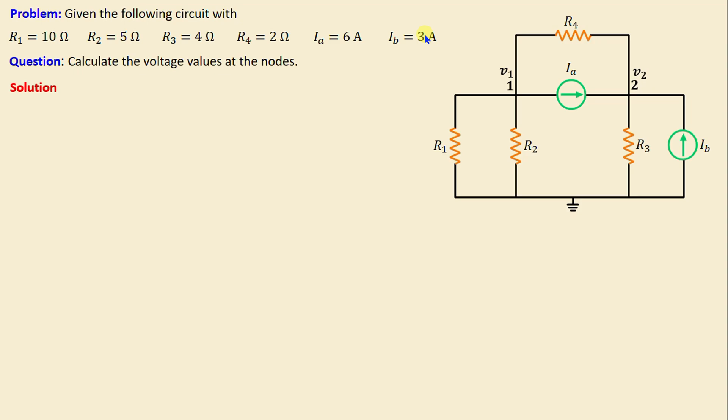Next, we need to select a reference node in the circuit. The reference node is typically chosen as the node with the most connections or as the ground node. Let's assign the currents in each branch: I1 is the current through resistor R1, I2 through R2, I3 through R3, and I4 through R4.